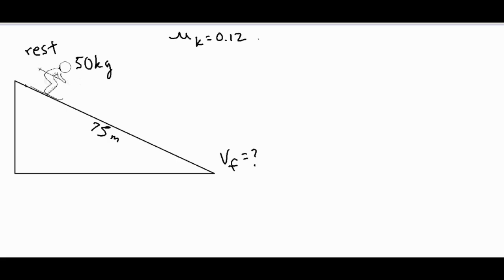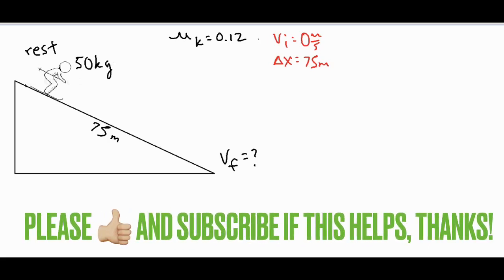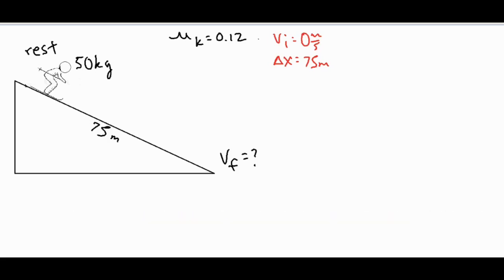When solving a problem like this we're going to use kinematic formulas. This is accelerated motion because the person is affected by the force of gravity causing them to accelerate. We have a couple of variables to label: the initial velocity is zero meters per second and the displacement is 75 meters. For kinematic formulas you always need three variables, and mass can indirectly help us find the acceleration.